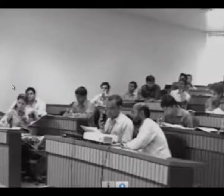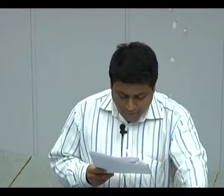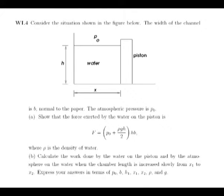We have to consider h as a function of x. For the work done by the atmosphere on the water: as x changes from x1 to x2, h changes from h1 to h2. The force acts downwards and the displacement is from h1 to h2. The pressure is the same but the top area varies, and hence the force varies — the force is again a function of x.